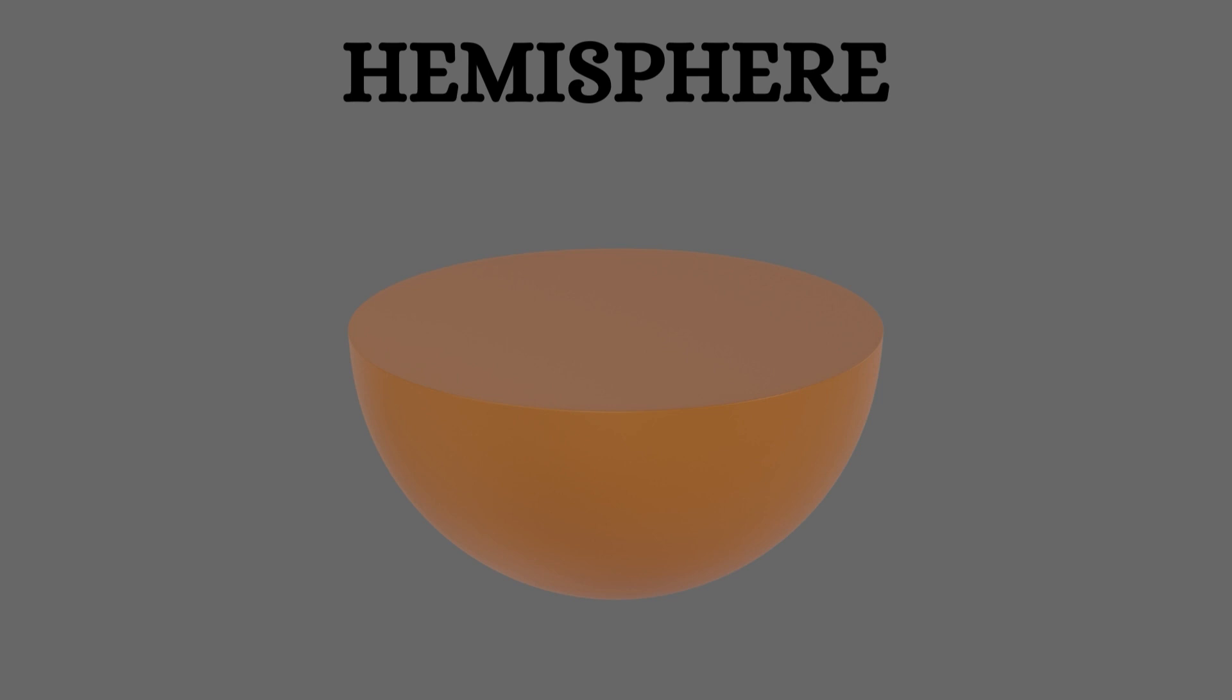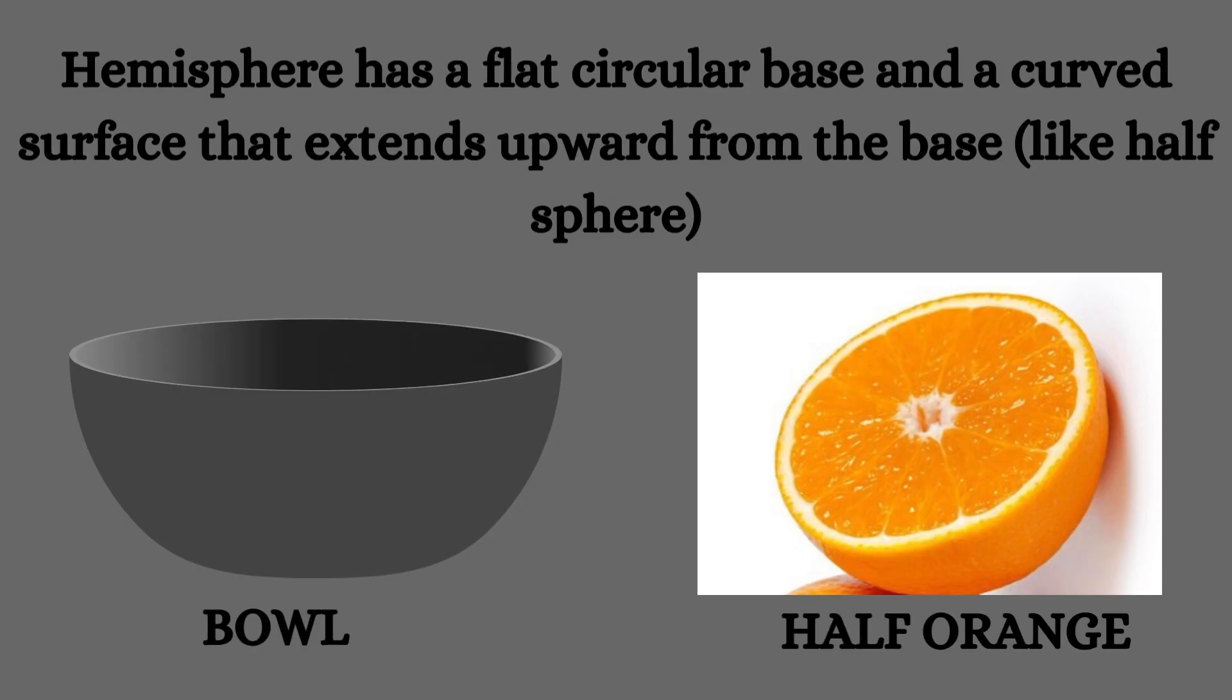Hemisphere. A hemisphere has a flat circular base and a curved surface that extends upward from the base, like half a sphere. Examples include a bowl and half-orange.